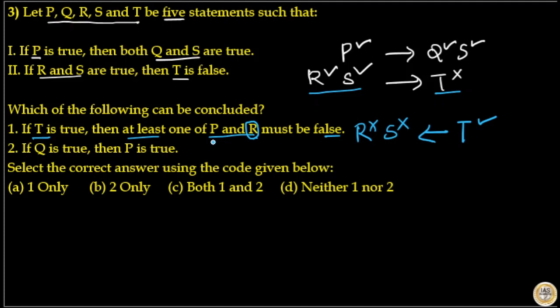So conclusion 1 seems to be correct, but let's check the status of P also. When T is true, S is false. If you look at the first statement, when both Q and S are true, that means P is true. So when S is false, we don't know the status of Q, so P can be true or false.